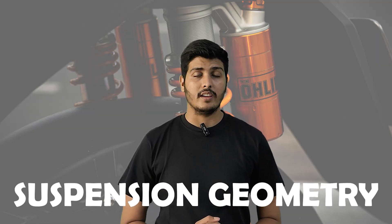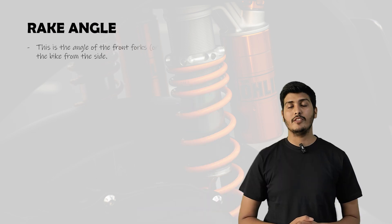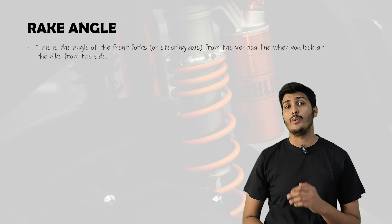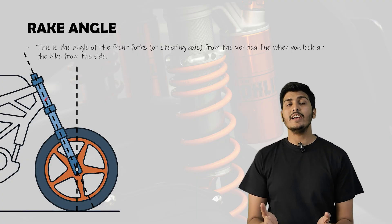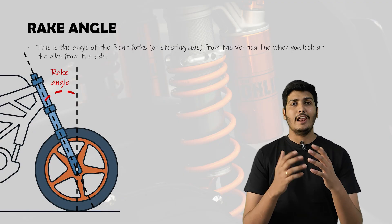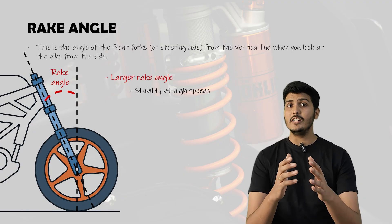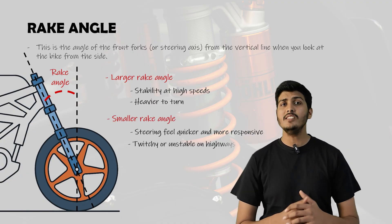Now let's talk about suspension geometry. It simply means how suspension parts are positioned and angled along the bike. These angles and points decide how your bike behaves — how it turns, how stable it feels and how it responds to bumps. Number one is the rake angle, also called the caster angle. This is the angle of the front fork or steering axis with the vertical line when you look at the bike from the side. Imagine drawing a straight line down through the front suspension — the rake is how much that line tilts backward. Most street bikes have a rake angle between 25 to 30 degrees. A larger rake angle gives stability at high speed but makes the bike feel heavier to turn, while a smaller rake angle makes steering quick and responsive but may feel unstable at high speeds.